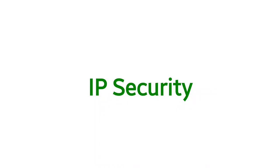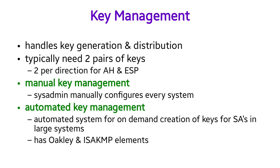This is the last topic of the IP Security chapter — key management. There are three functional areas of IP security. First is authentication, provided with the help of the Authentication Header (AH) protocol, operating in both transport mode and tunnel mode. Second is confidentiality, provided with the help of encryption using the Encapsulating Security Payload (ESP) protocol, which also operates in both transport and tunnel mode.